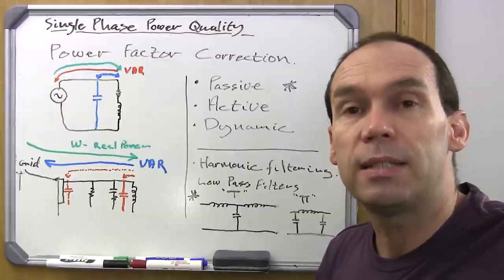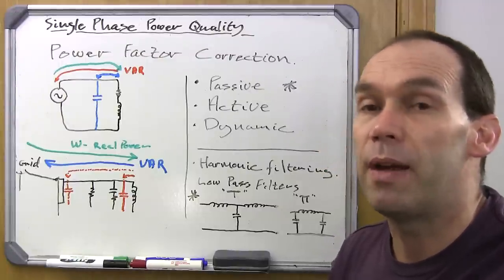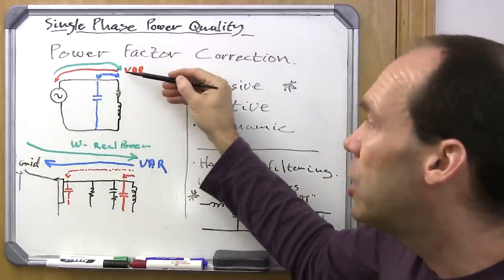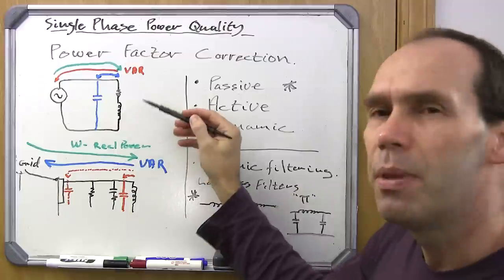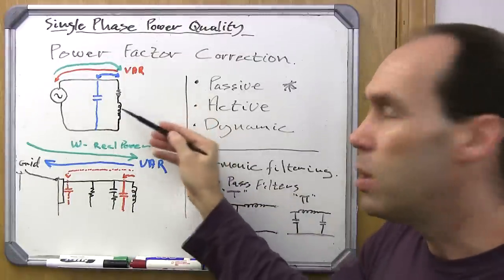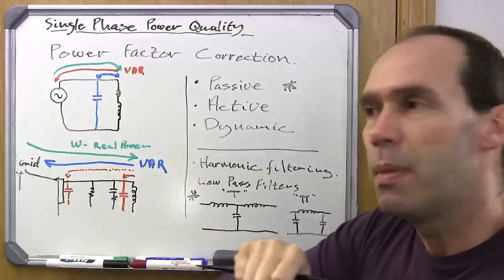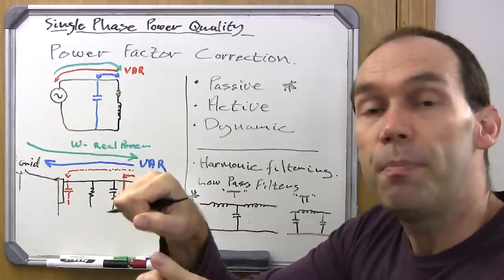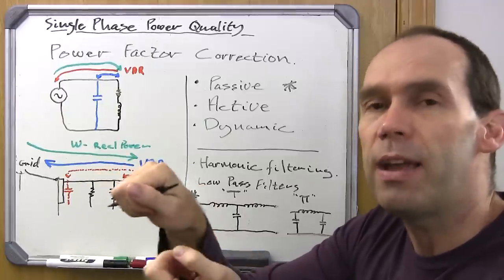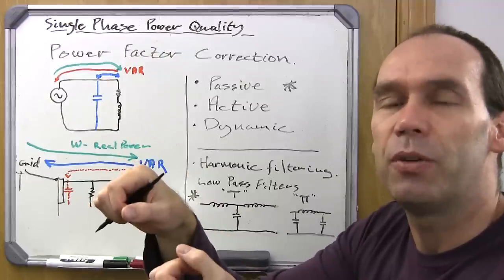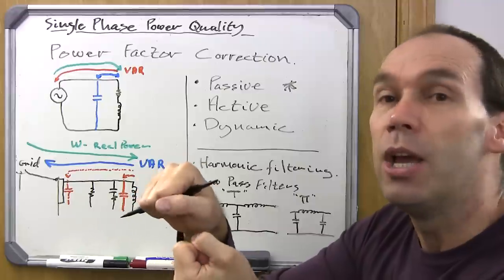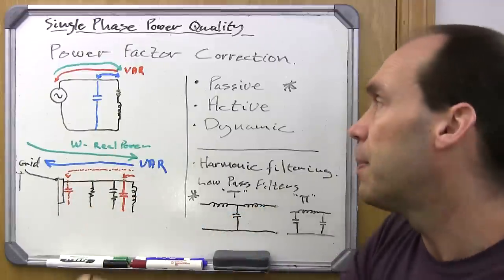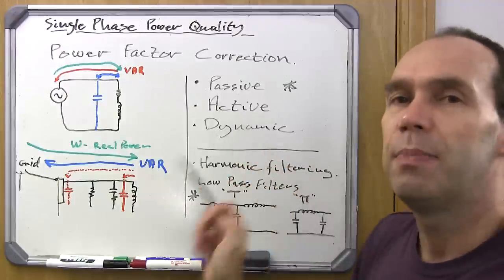For that inductive load I need about 7.5 microfarads, and that would be passive because it's a single component that isn't going to change — suitable for a static load. But if this motor varies, if it's pulling a varying load, that will change the dynamics of the power draw and phase. With a static power factor correction component in place, your power factor will go out. It will certainly help, but things will drift, and that's where we move to active power correction.